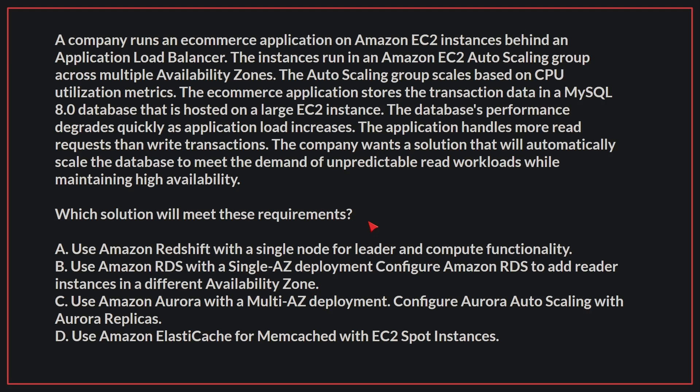A company runs an e-commerce application on Amazon EC2 instances behind an application load balancer. The instances run in an Amazon EC2 auto-scaling group across multiple availability zones. The auto-scaling group scales based on CPU utilization metrics. The e-commerce application stores the transaction data in a MySQL 8.0 database hosted on a large EC2 instance. The database's performance degrades quickly as application load increases. The application handles more read requests than write transactions. The company wants a solution that will automatically scale the database to meet the demand of unpredictable read workloads while maintaining high availability. Which solution will meet these requirements?